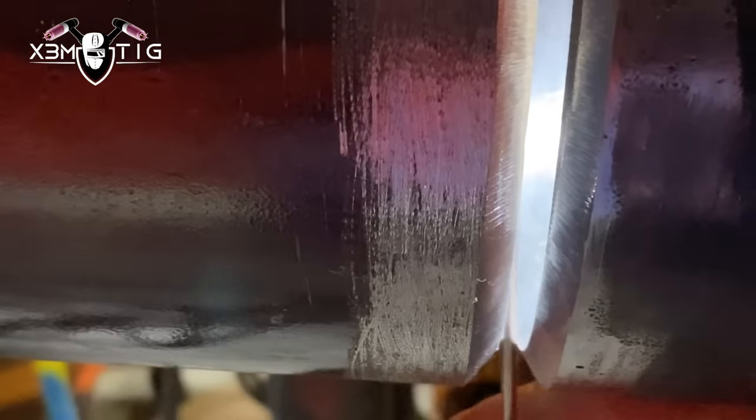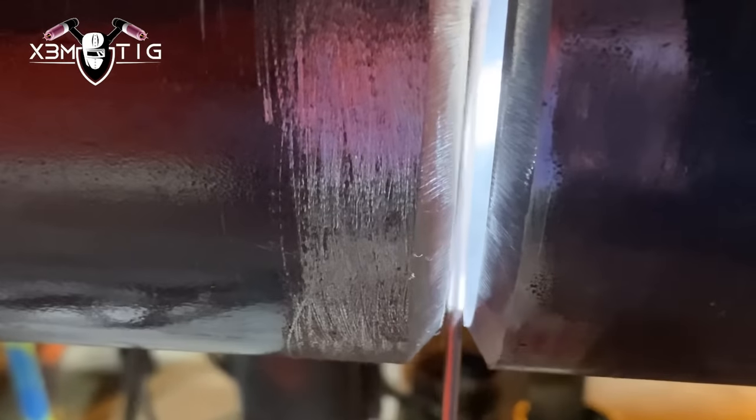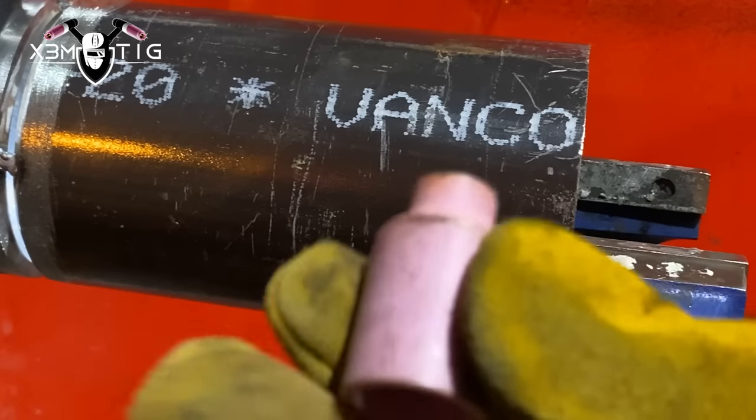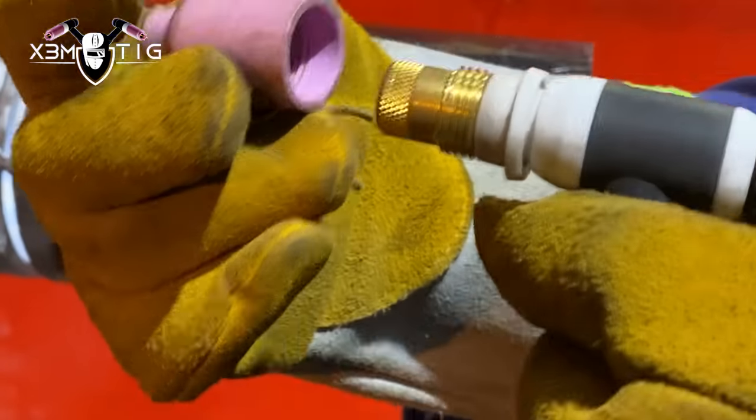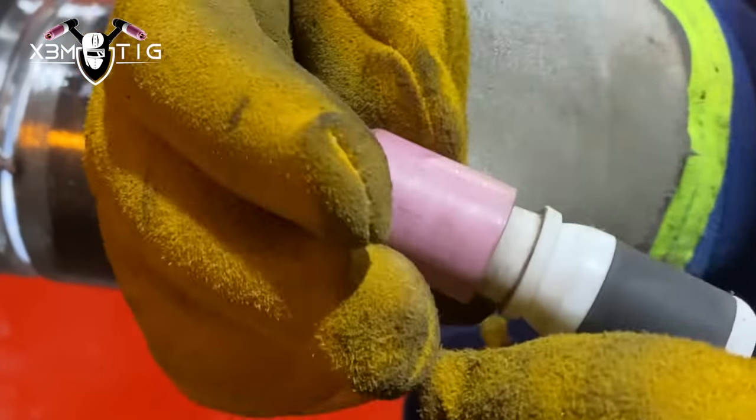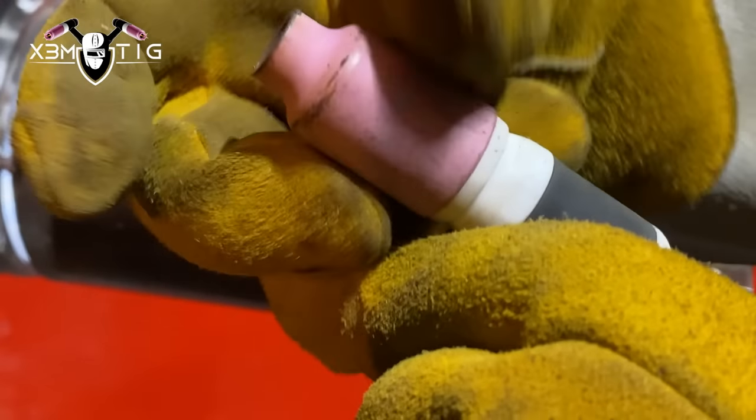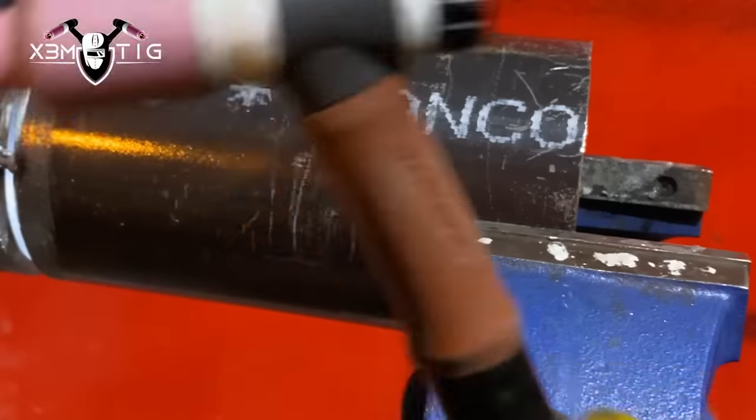So no tacks on the bottom for this one. For the cup, cup size I'm gonna go with cup size 7. It fits nice inside that bevel so I can wiggle that torch inside especially at the bottom.